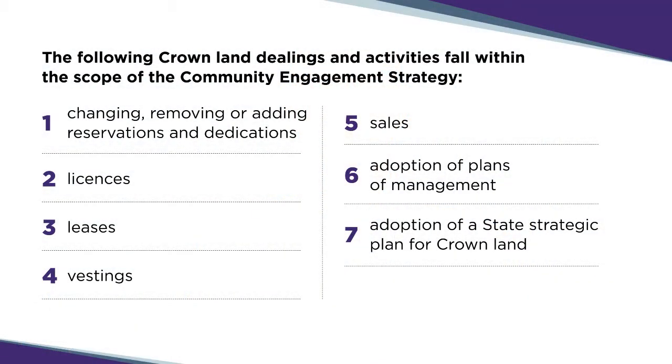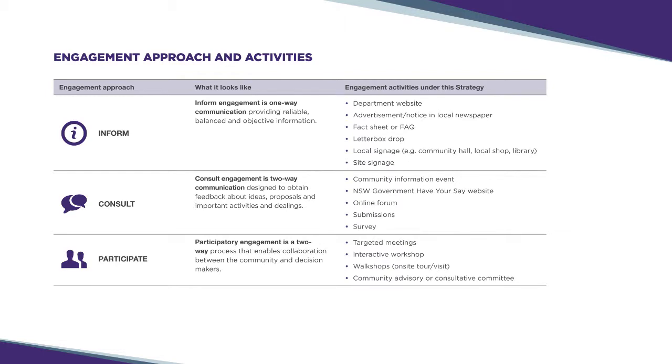Under the new community engagement strategy, engagement about Crown land will occur where a proposed dealing or activity is likely to have a negative impact on current community use and enjoyment of Crown land. There are seven types of dealings and activities that fall within the scope of the community engagement strategy. Some Crown land dealings and activities are excluded, and these are identified in the draft strategy. Where an activity or dealing is within scope and impacts on current community use and enjoyment, we need to determine whether the likely level of impact will be minimal, moderate or high. Once the level of impact has been identified, there are three engagement approaches: inform, consult, participate.